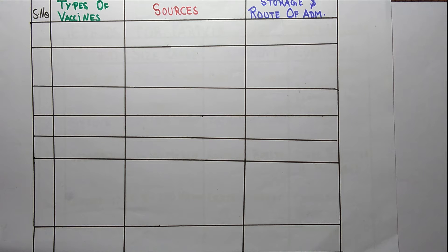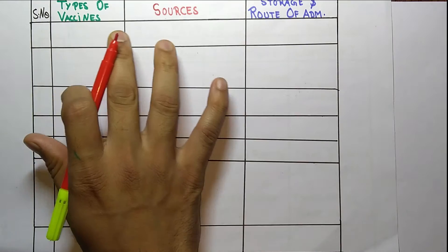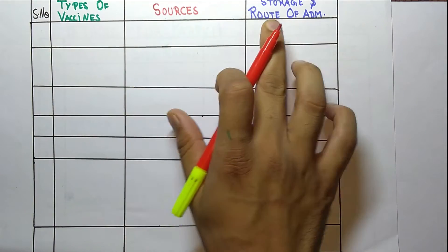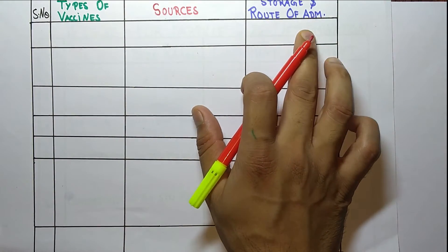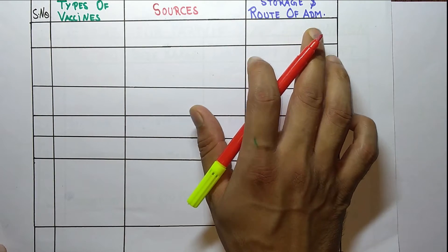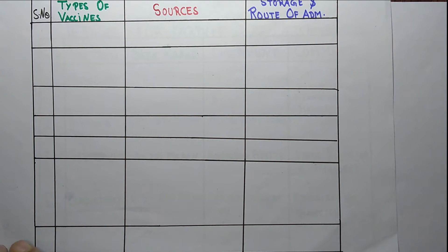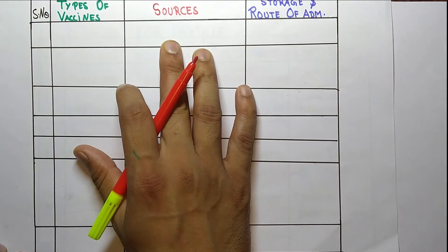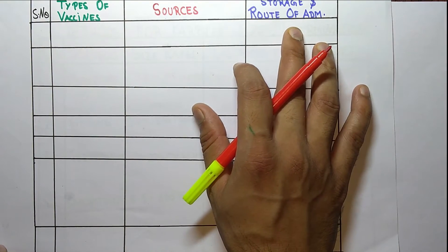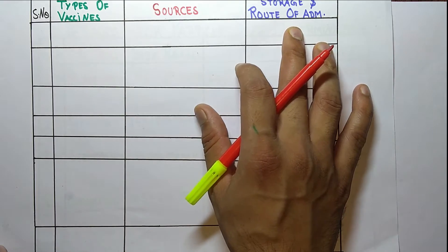Hello students, welcome to the channel Pharma4U. Today in this video we are going to discuss the types of vaccines, their sources, storage, and route of administration. The question may arise: what is the source of a vaccine, its storage temperature, and its route of administration?